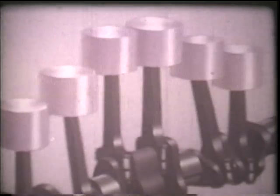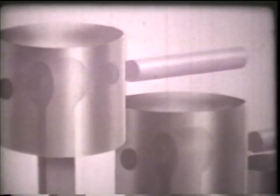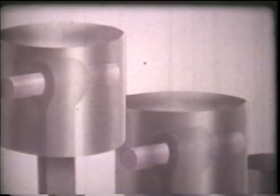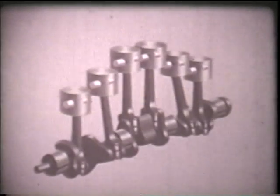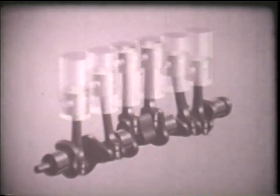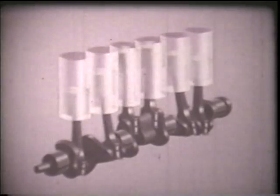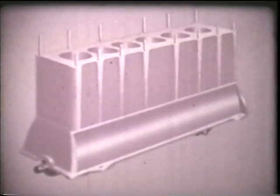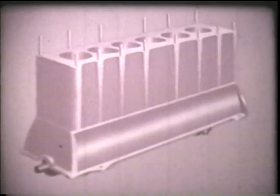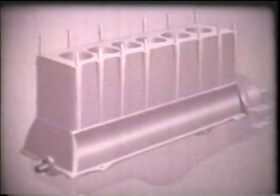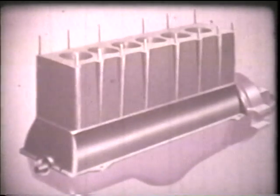The pistons are fastened to the other end of the connecting rods by piston pins, often called wrist pins. The cylinders themselves are mirror-smooth holes in a metal casting called a cylinder block. The lower part of the block and the oil pan which is fastened to the bottom make up the crankcase.